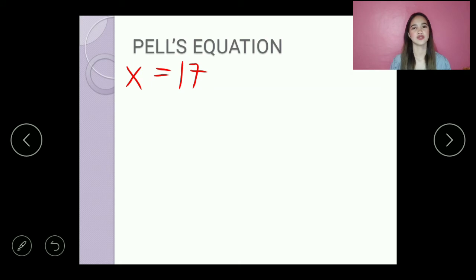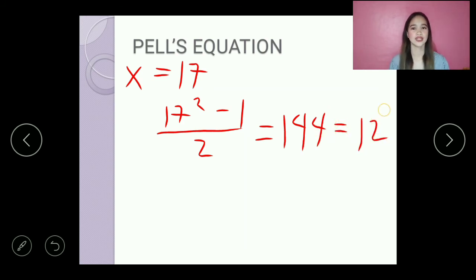So let us substitute the value of x, which is 17, to our equation. So 17 raised to 2 minus 1 all over 2 equals 144. And 144 equals 12 raised to 2. So 17 and 12 is another positive solution.